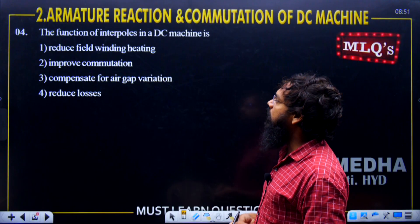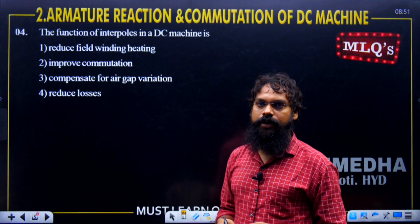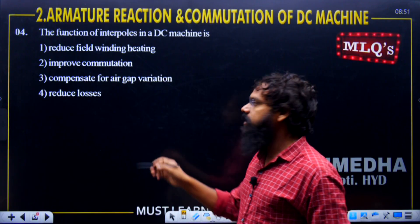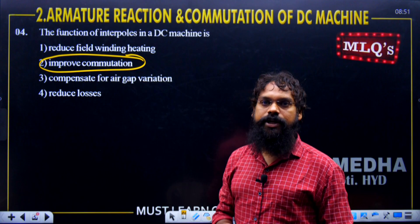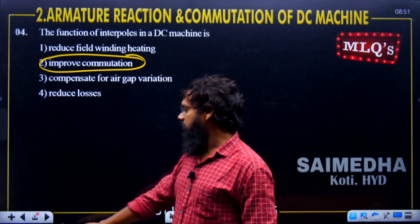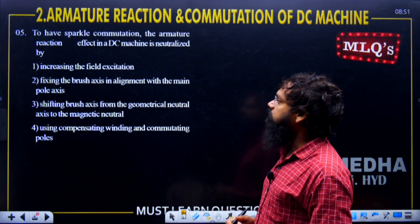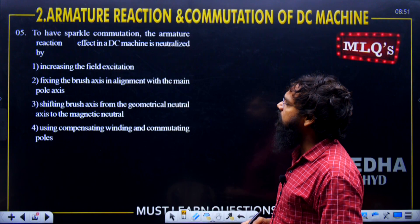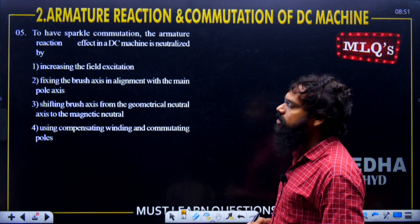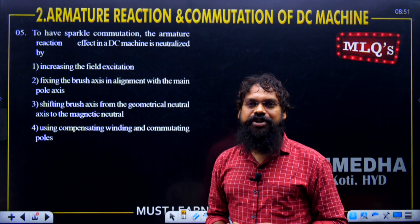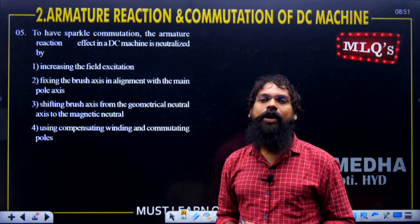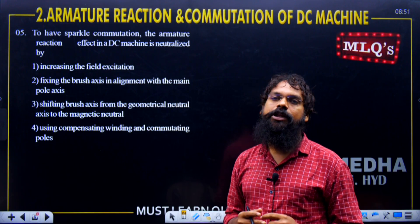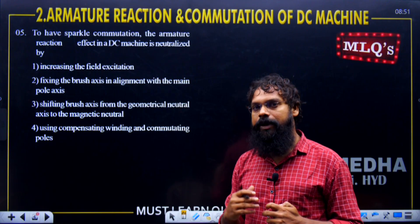Next, the function of interpoles in a DC machine is to improve commutation. Next question: to have sparkless commutation, the armature reaction effect in a DC machine is neutralized by using interpole winding and compensating winding. We try to minimize the armature reaction effect.